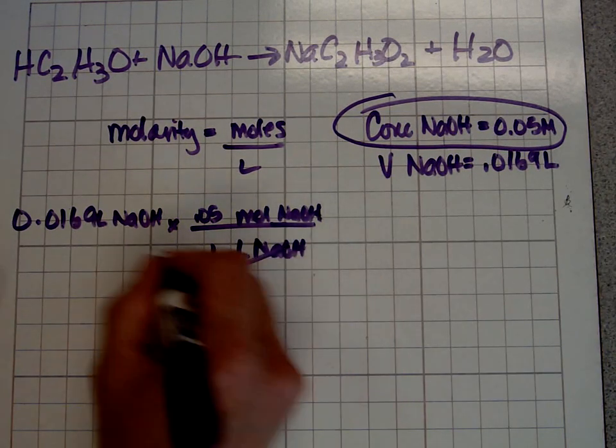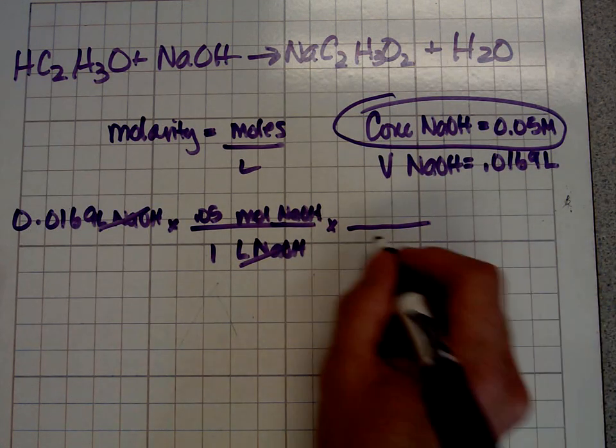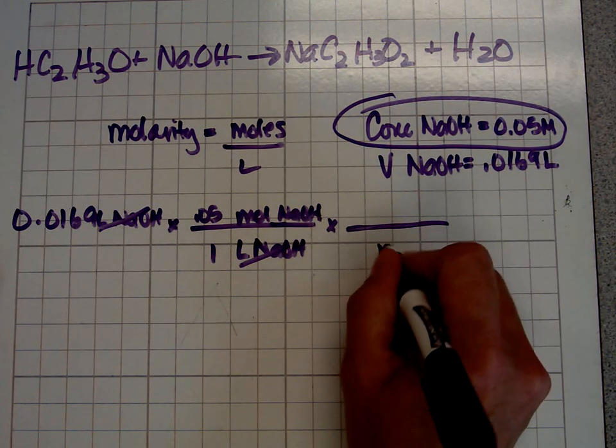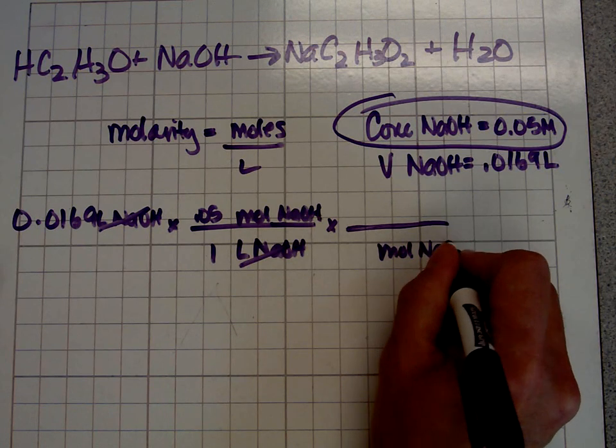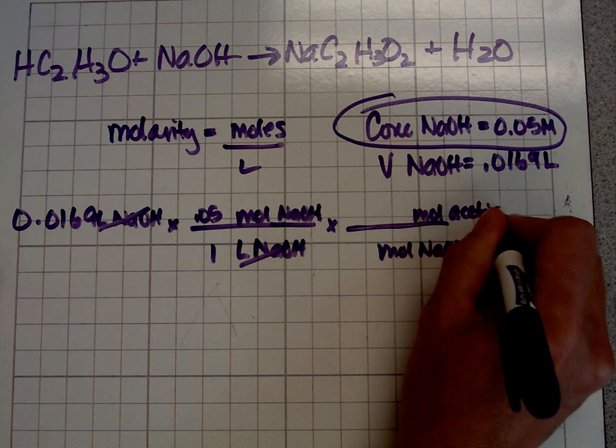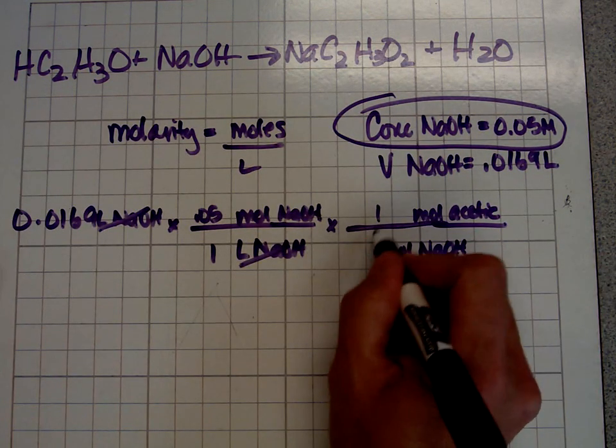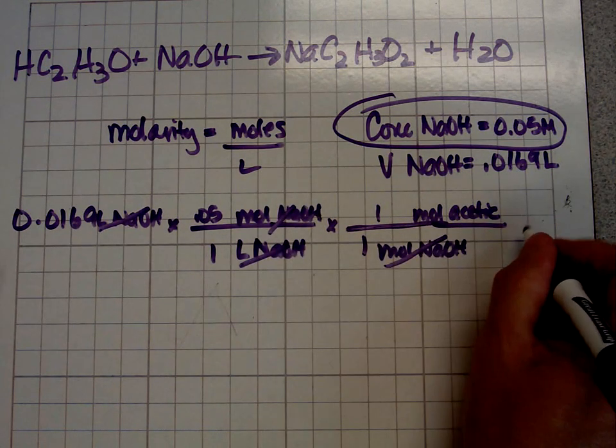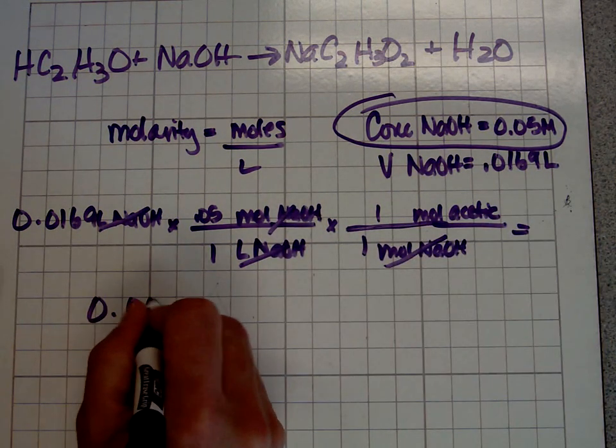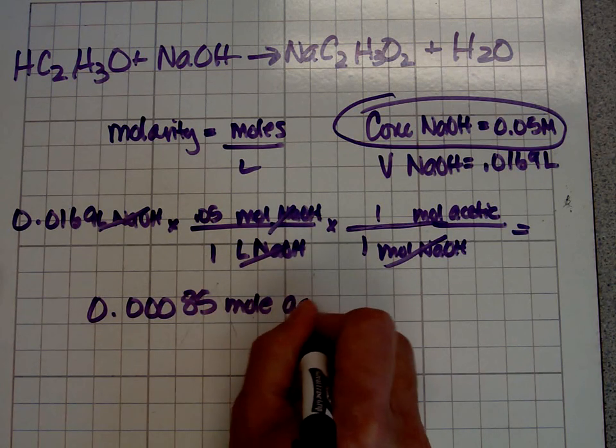Because right now I have moles of sodium hydroxide, and what I need are moles of acetic acid. So I'm going to get rid of moles of sodium hydroxide and be left with moles of acetic acid. By using our equation, you see that it's a one to one ratio. That makes it easy to calculate. So we have 0.00085 moles of acetic acid.